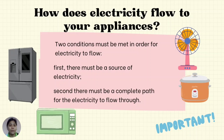Look around your house. How many appliances do you see? How many are currently plugged into your wall outlets? Most households have several devices that make use of electricity. The number of appliances you have at home shows how important electricity is in our everyday lives. How does electricity flow to your appliances?